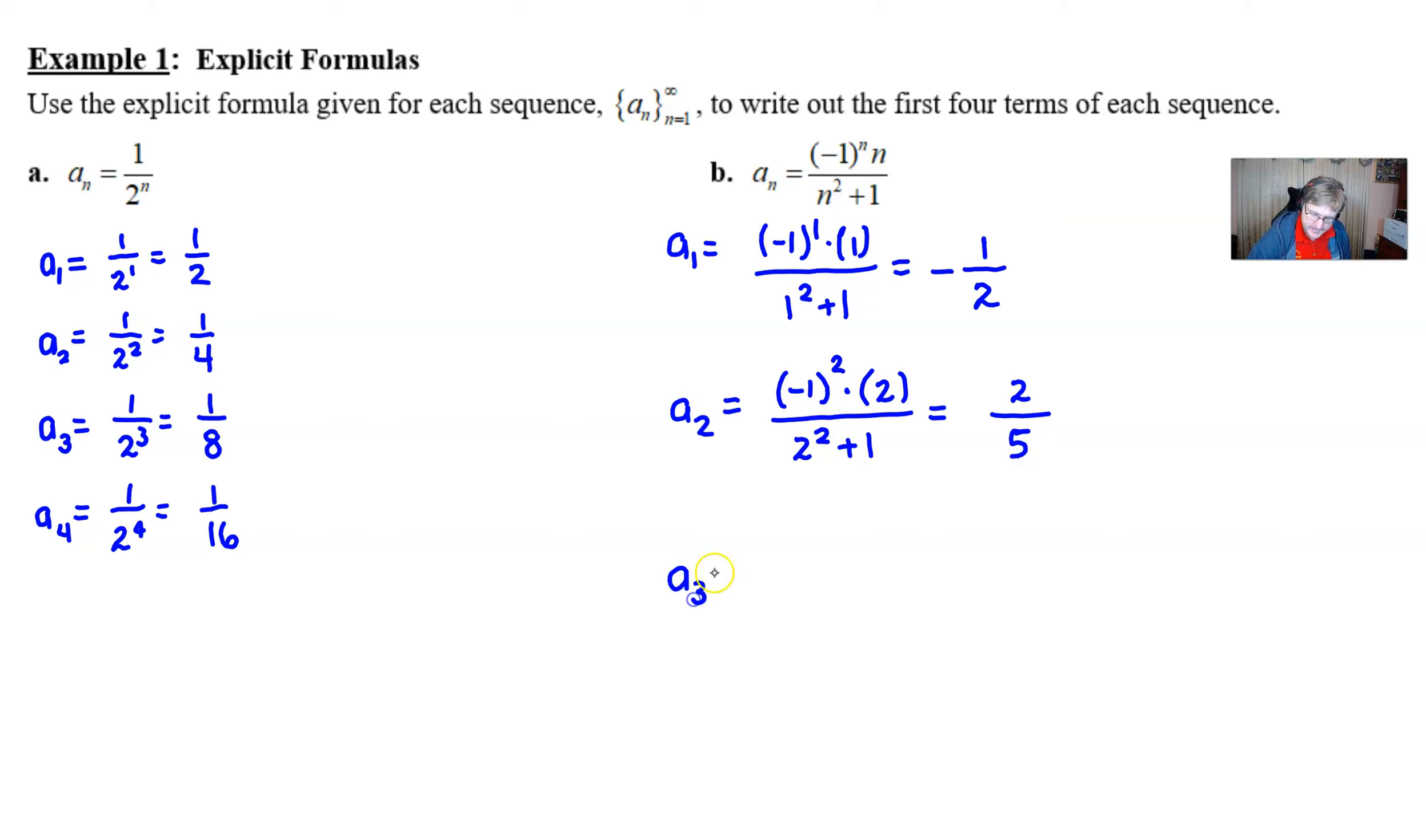a_3 begins as negative 1 to the 3rd times 3 over 3 squared plus 1. And when you look closely at this, you find out that you are right back to a negative again. The 3 numerator stays, and then 3 squared plus 1 is going to be 10.